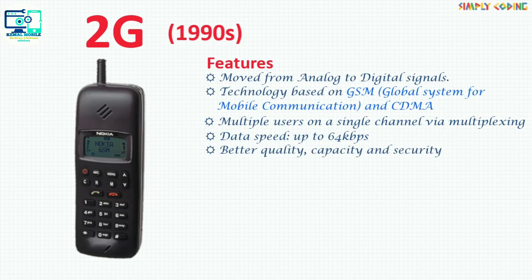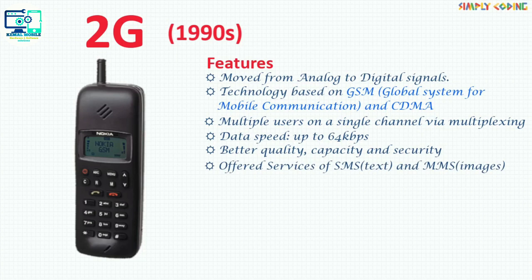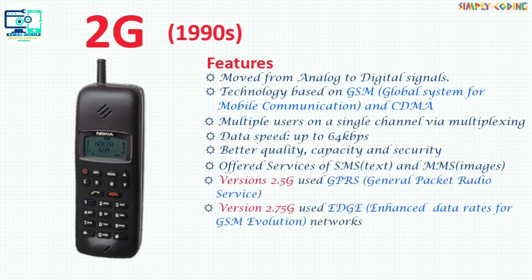Security also improved. It introduced services such as SMS, which refers to text messages, and MMS, which refers to messages with a picture or a video. The later version of this generation, called 2.5G, used GPRS, which is General Packet Radio Service.